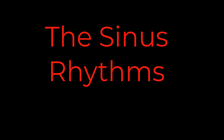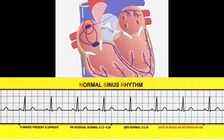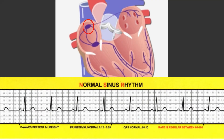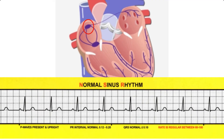This video covers the sinus rhythms and the dysrhythmias we apply the sinus label to. Sinus rhythms originate in the SA node, the sinoatrial node. They're characterized by regular P waves, regular PR intervals, one QRS following each P wave, and all normal durations and measurements should be present.